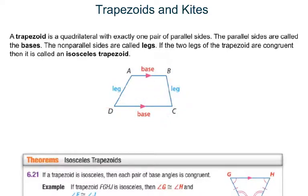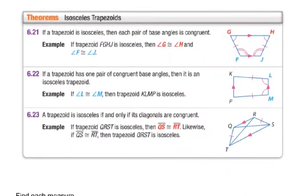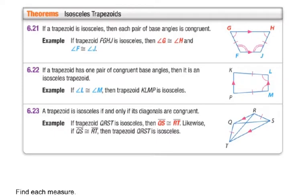If the two legs were congruent, it would be referred to as an isosceles trapezoid. A couple of things about an isosceles trapezoid: the two base angles connected to one of the parallel sides are always congruent. That means the two angles along the top base will also be congruent to each other.